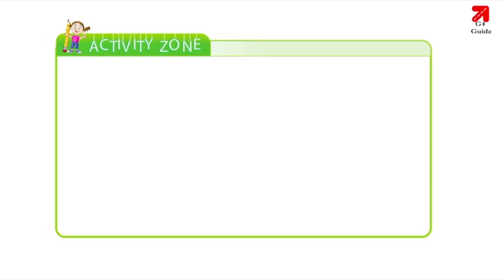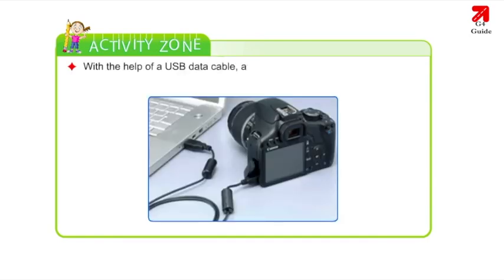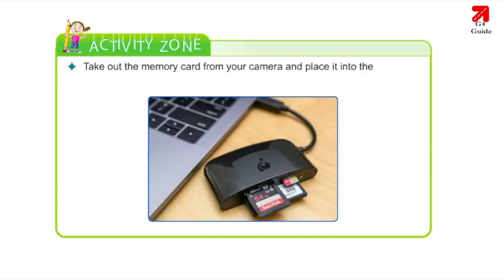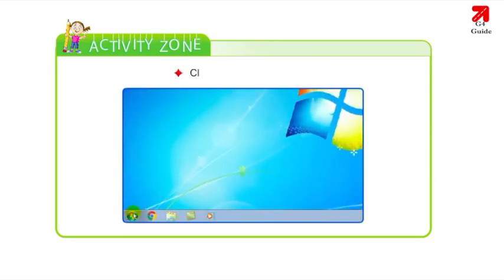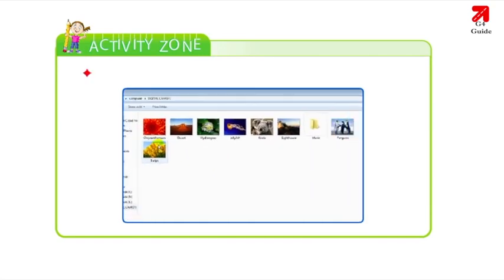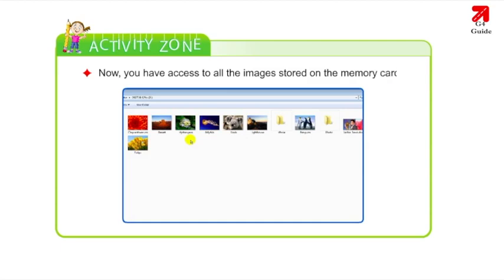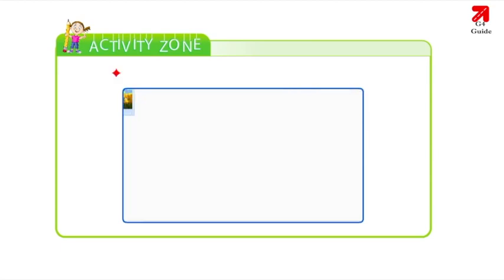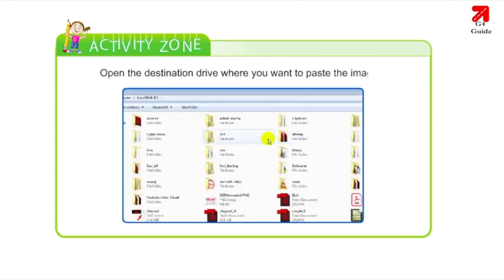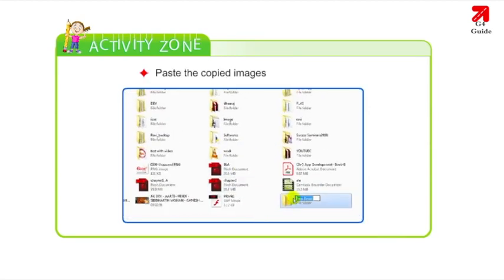Activity — How to transfer an image from a digital camera to your computer: With the help of a USB data cable, attach the memory card reader of your digital camera to the USB slot on your PC. Take out the memory card from your camera and place it into the memory card reader. Click Start, then go to Computer. Open the memory card drive by double clicking on it. Select and copy the files you want to transfer. Open the destination drive and paste the copied images in the new folder.